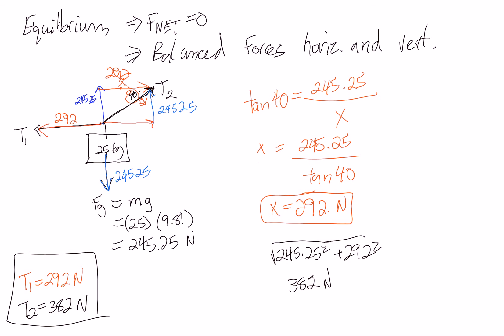Tension 2 equals 382 newtons, and we're done. The verticals balance, the horizontals balance in opposite directions. If the question asked whether a rope rated at 300 newtons would hold: tension 1 at 292 newtons would be fine, but tension 2 at 382 newtons exceeds 300 newtons, so that rope would likely break. You'd need a stronger rope in that case.